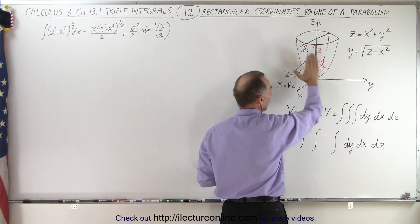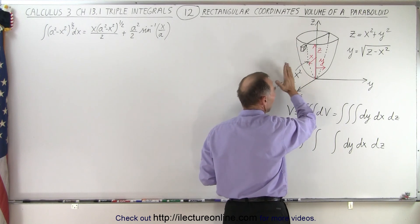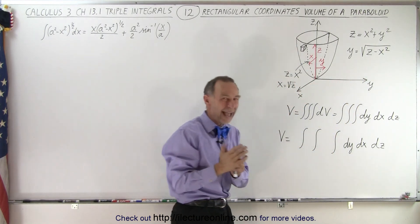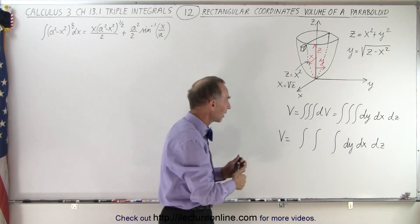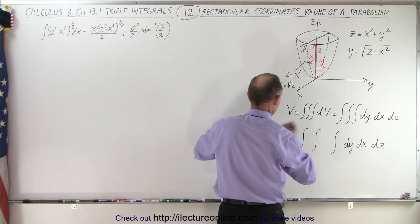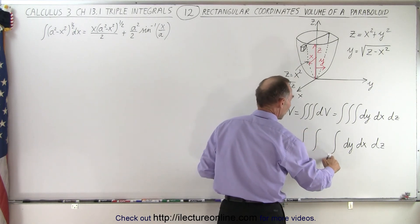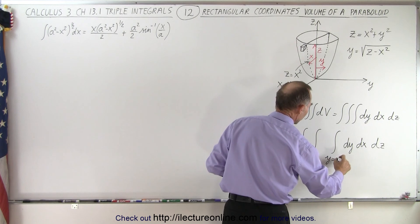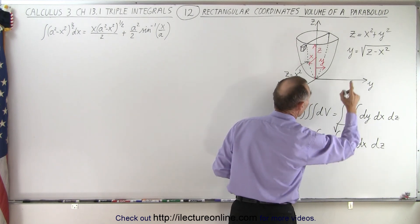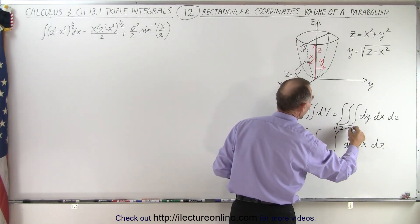So that means that if we start from the xy plane where y is equal to 0 and we go outward we're only covering half the paraboloid so we have to multiply times 2. So let's do that here times 2 and our y limits are going to go from 0 to the square root of z minus x squared.